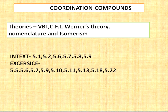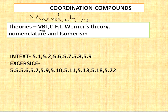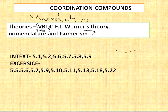Next is Coordination Compounds. First, learn nomenclature and isomerism — they will give you a structure and you have to give its name. Valence Bond Theory (VBT) is the most important theory — 100% a question will be there. Crystal Field Theory (CFT) will also be there, along with Werner's theory. Structure isomerism and position isomerism questions will definitely come. Nomenclature also plays a big role here.